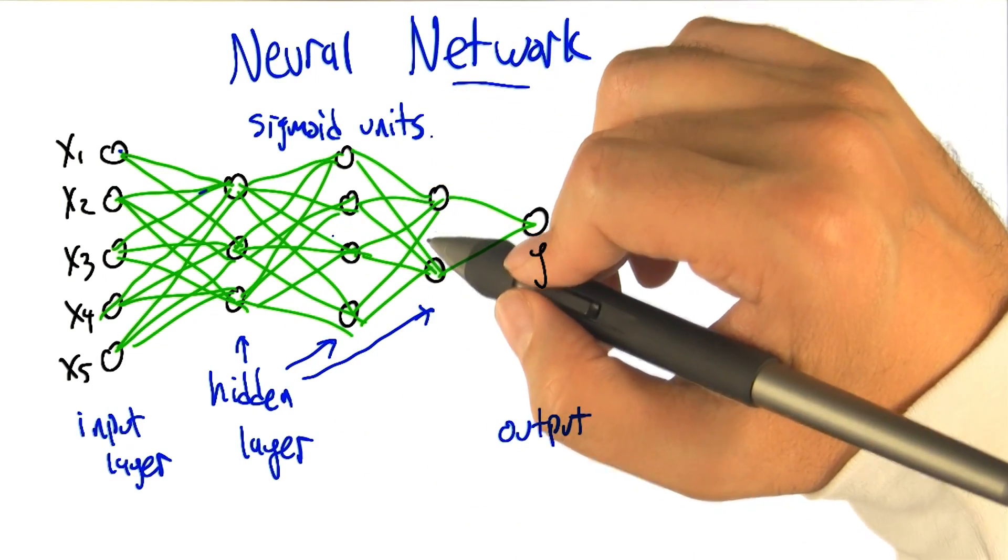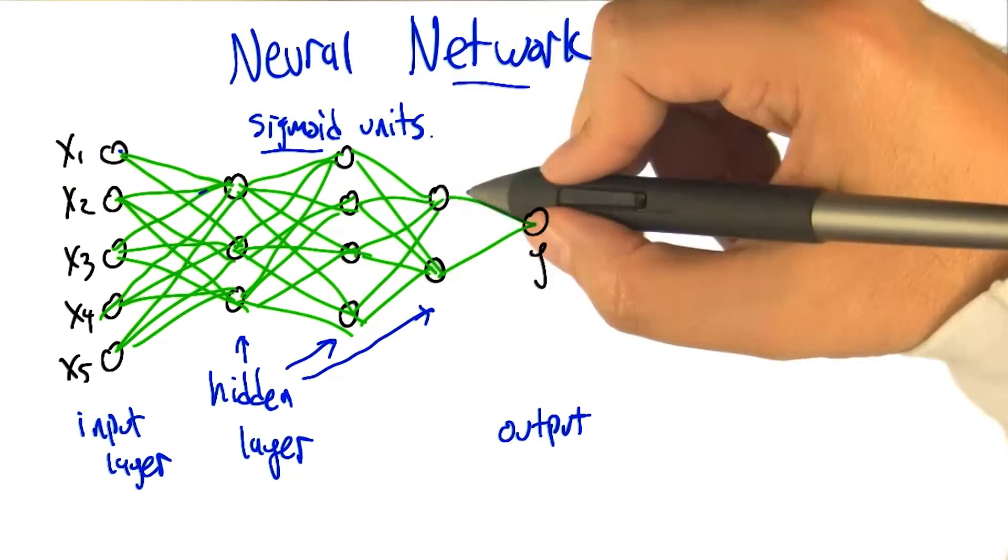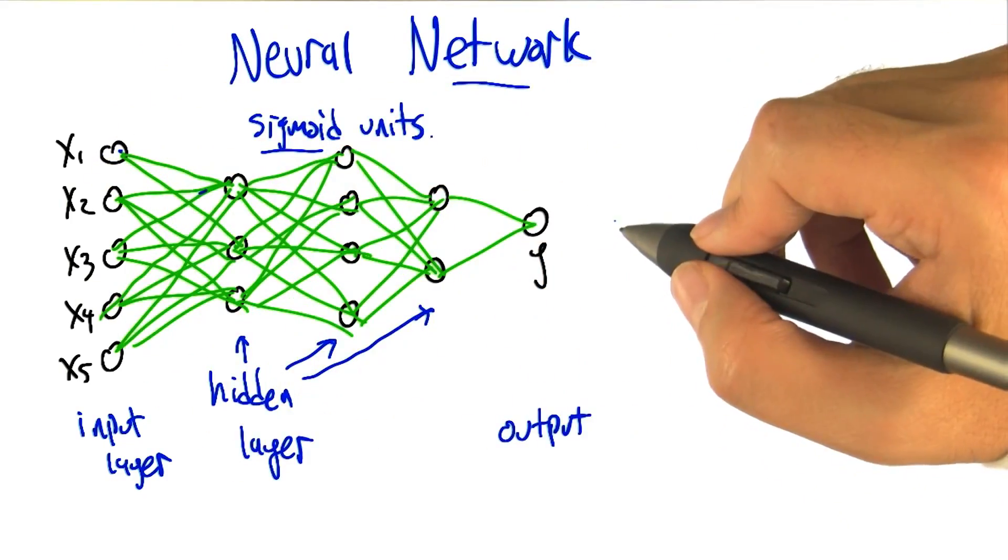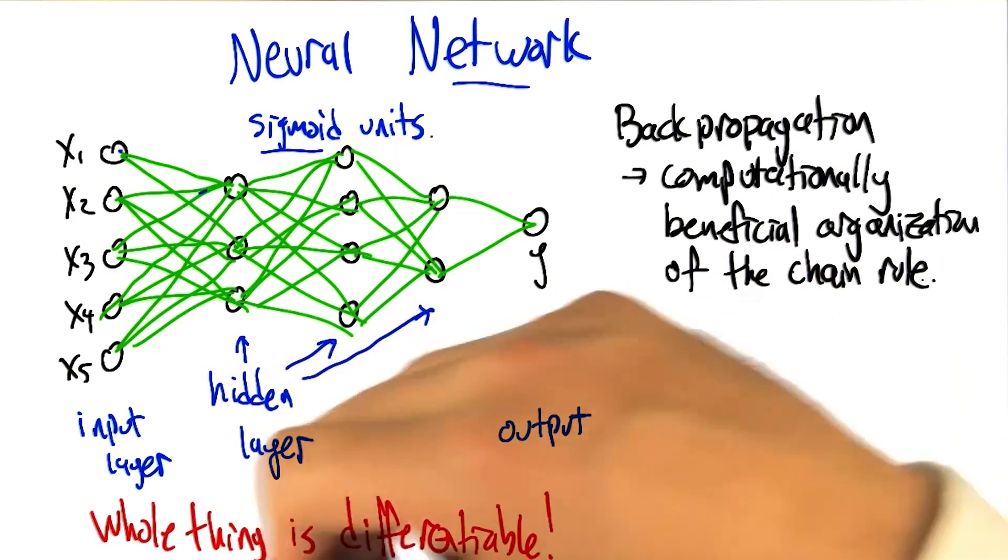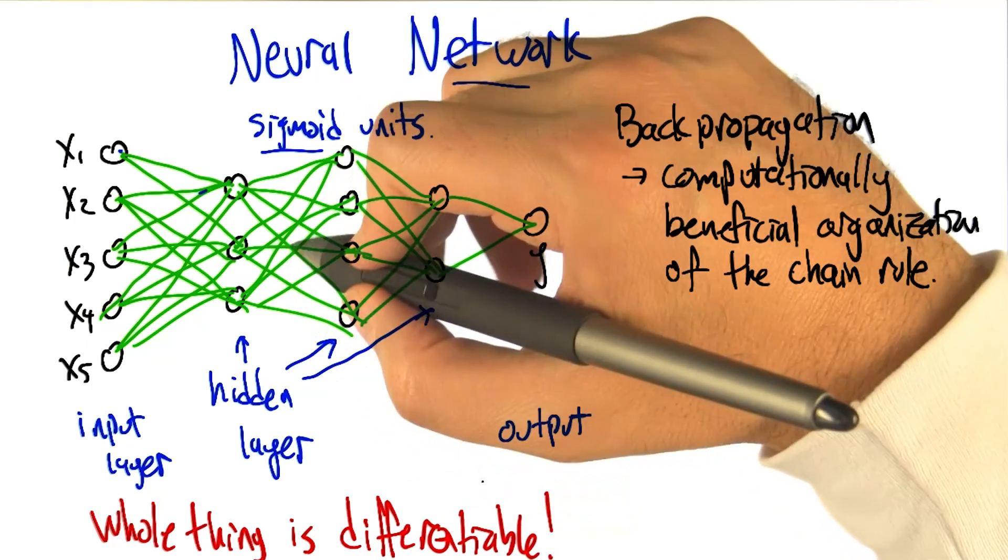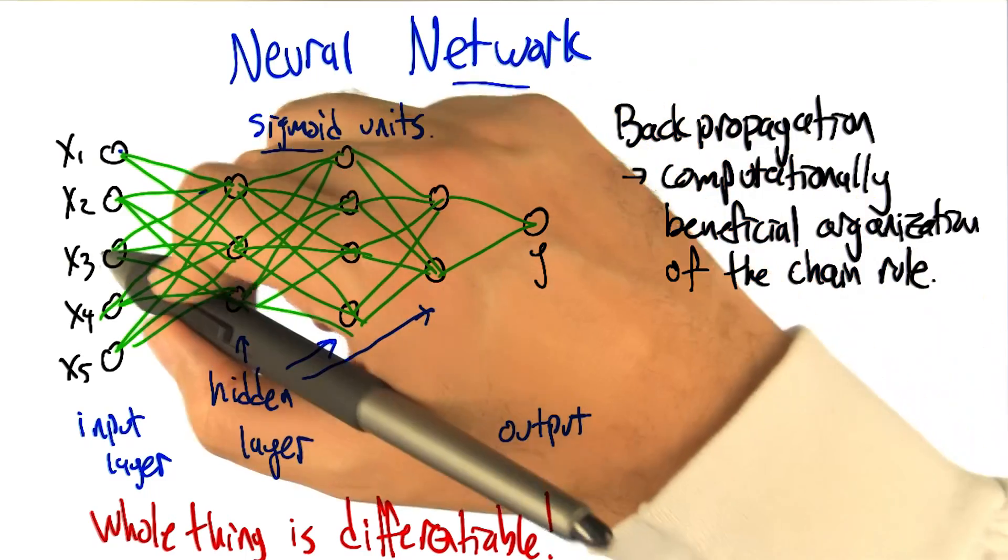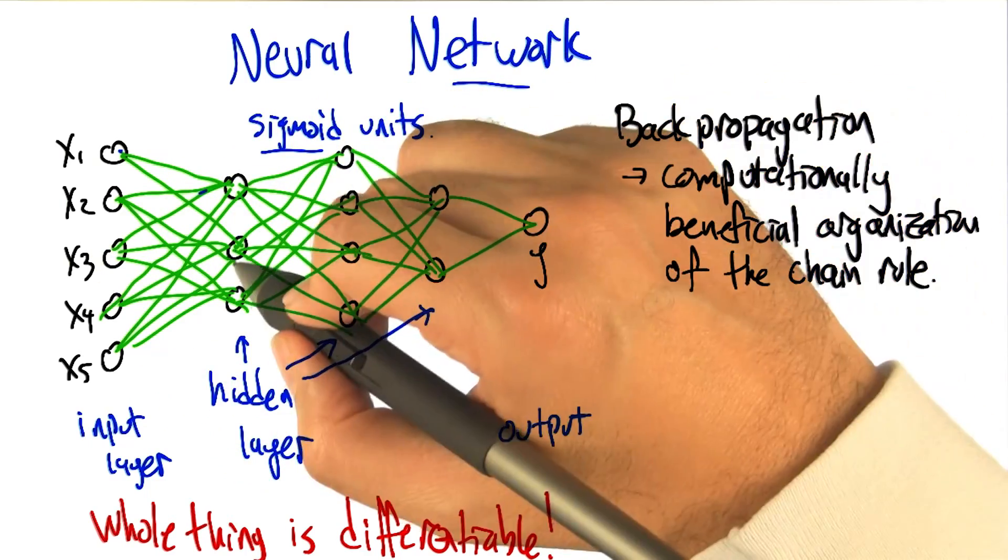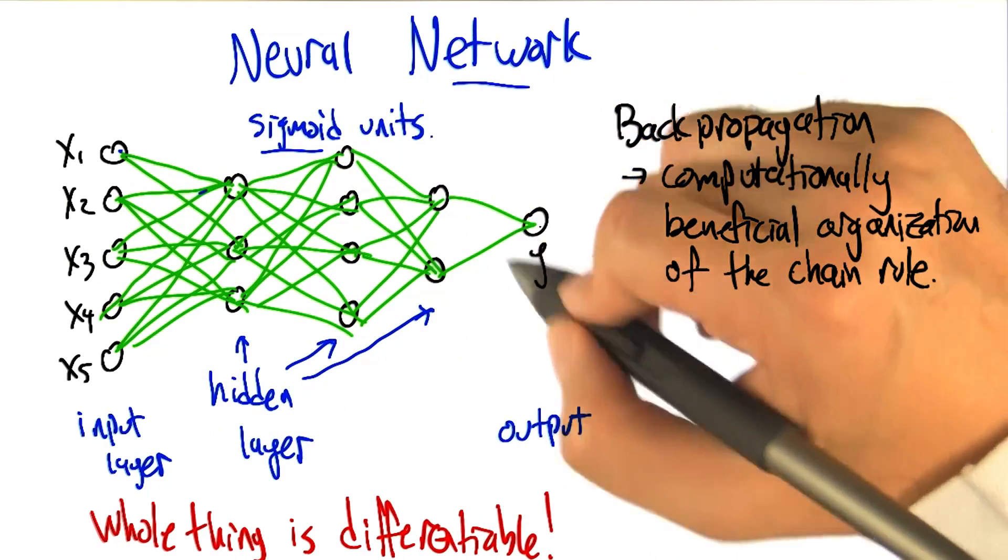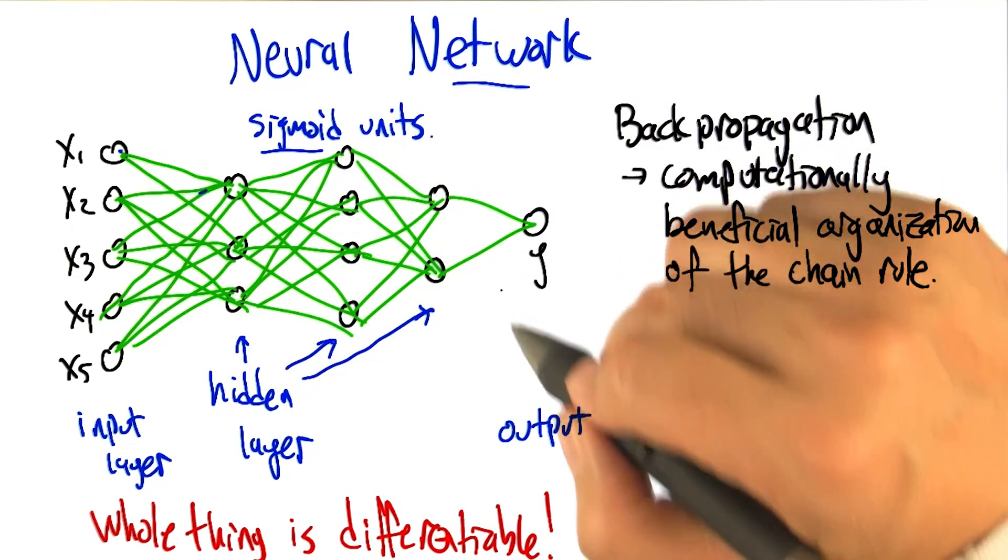So what's cool about this is in the case where all these are sigmoid units, this mapping from input to output is differentiable in terms of the weights. By saying the whole thing is differentiable, what I'm saying is that we can figure out for any given weight in the network, how moving it up or down a little bit is going to change the mapping from inputs to outputs. So we can move all those weights in the direction of producing something more like the output that we want, even though there's all these crazy non-linearities in between.